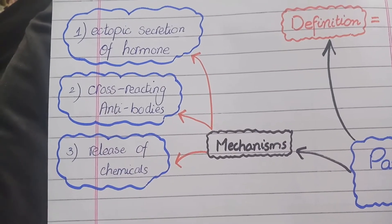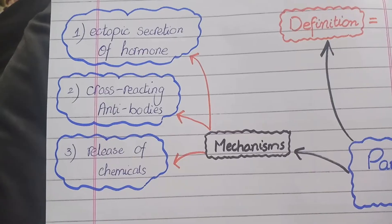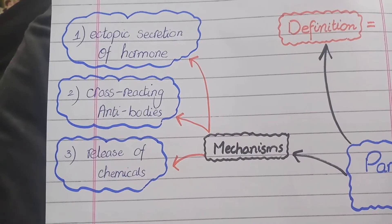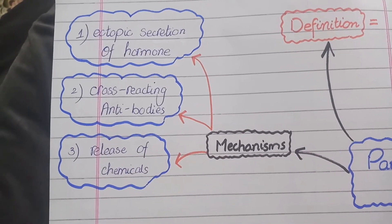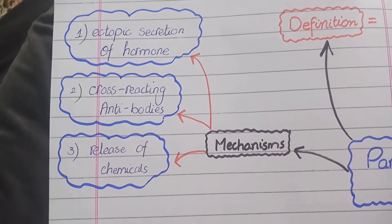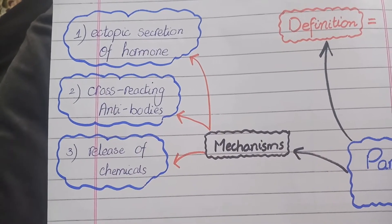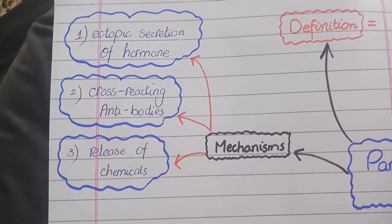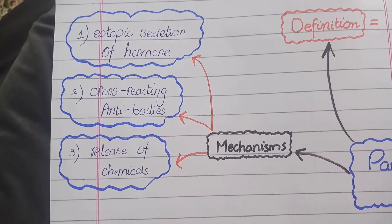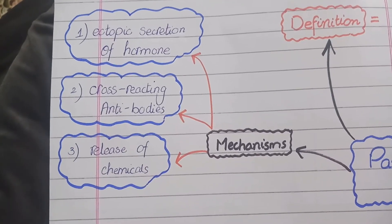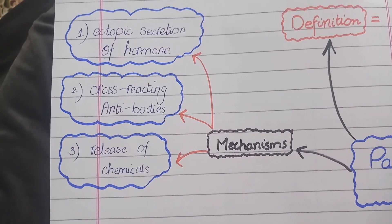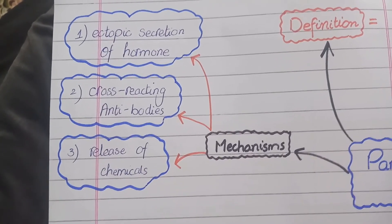The third mechanism can be the release of some physiological substances — for example, some pro-coagulants that activate the coagulation system of the blood — and this can also be referred to as a paraneoplastic effect.